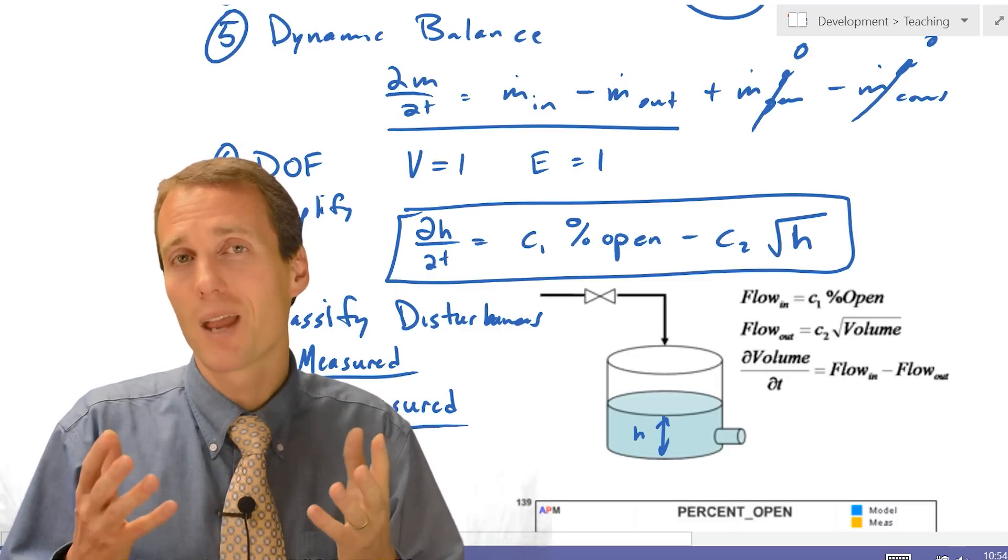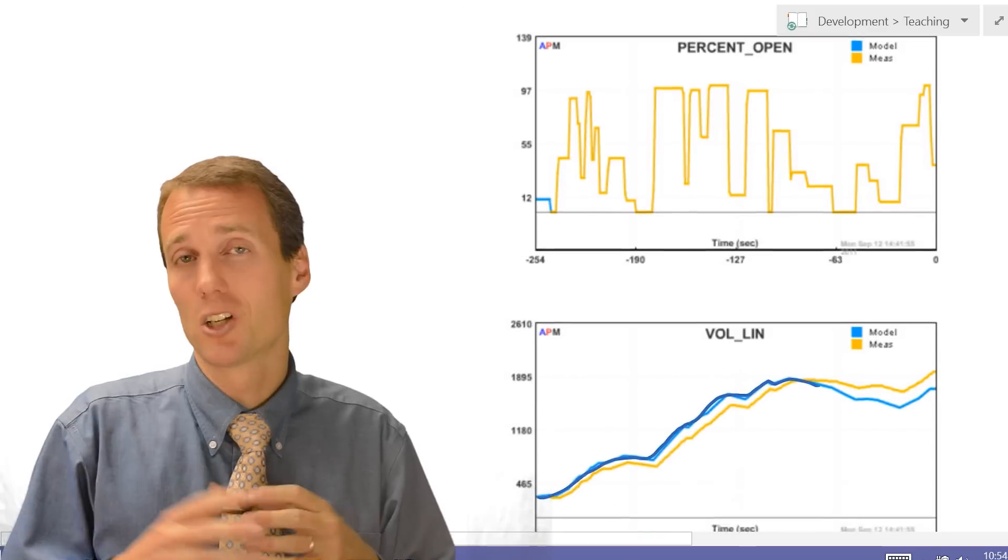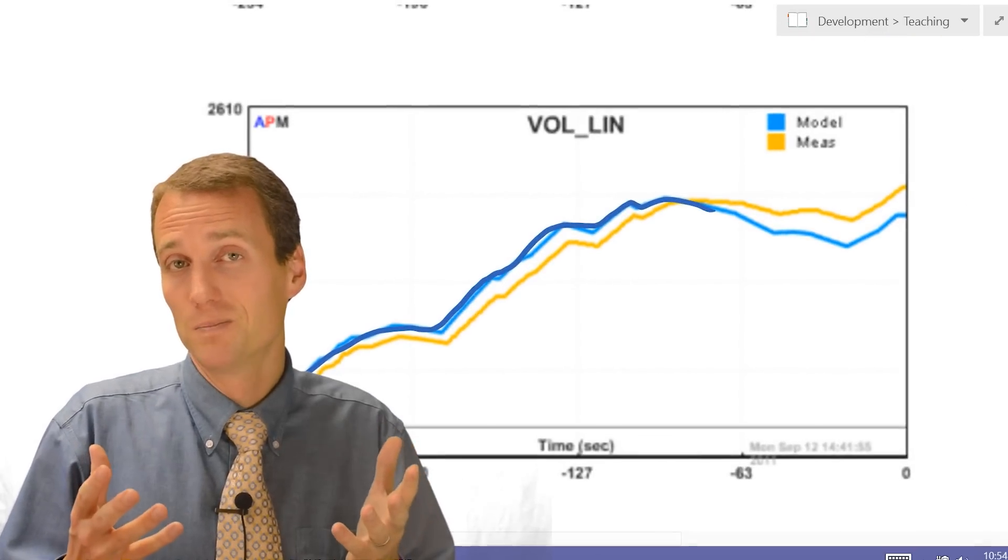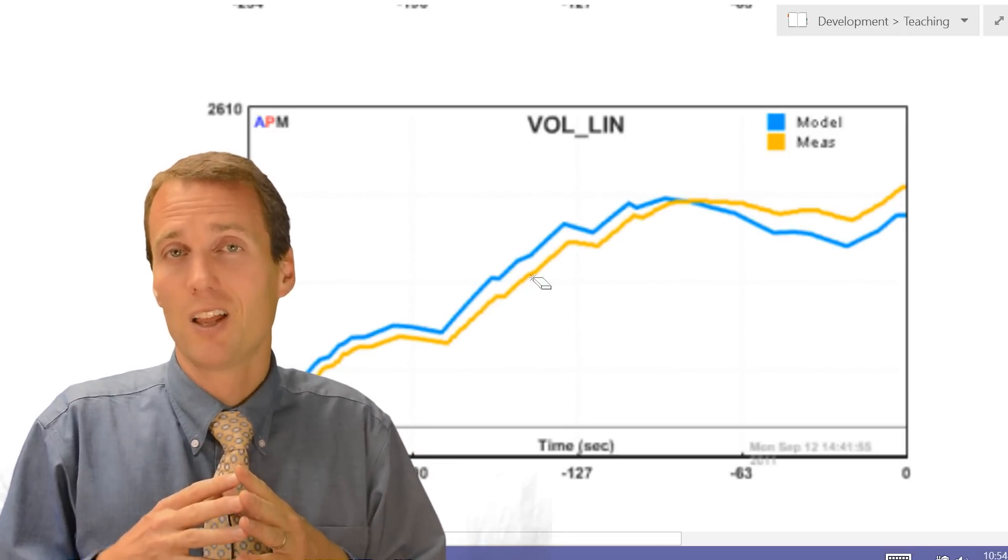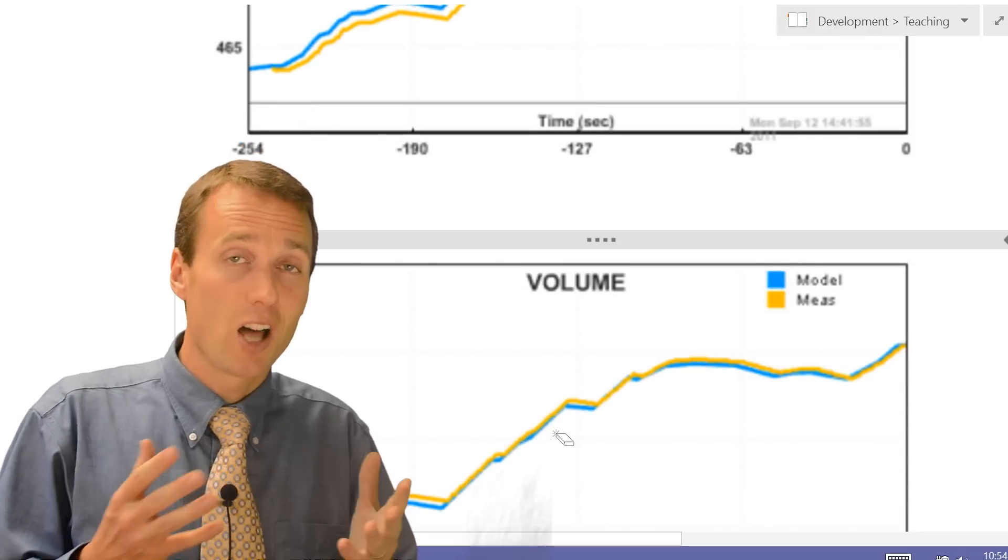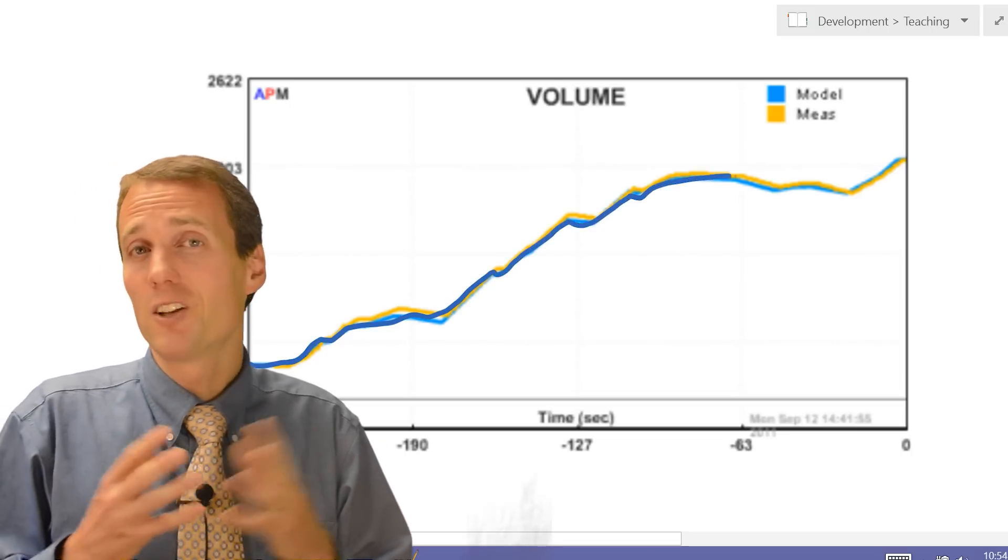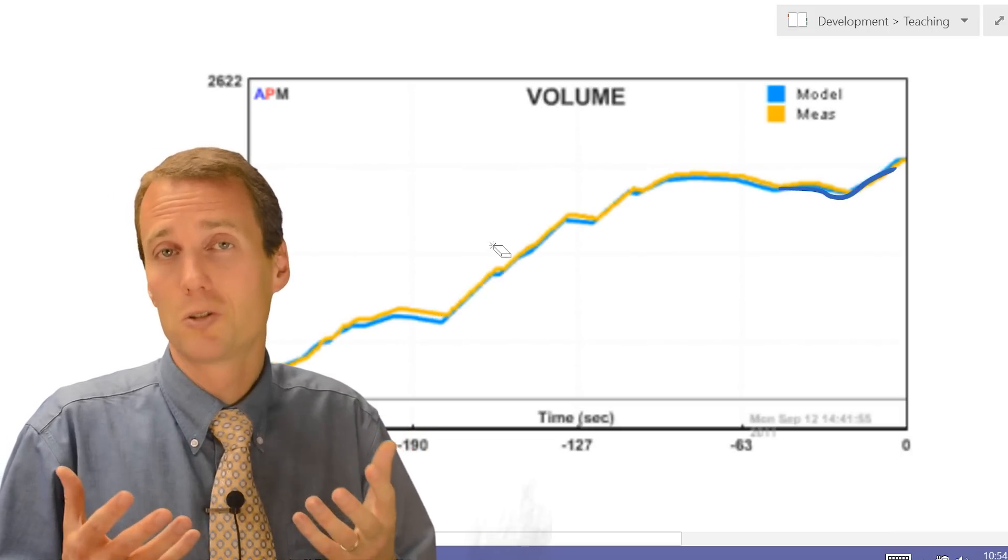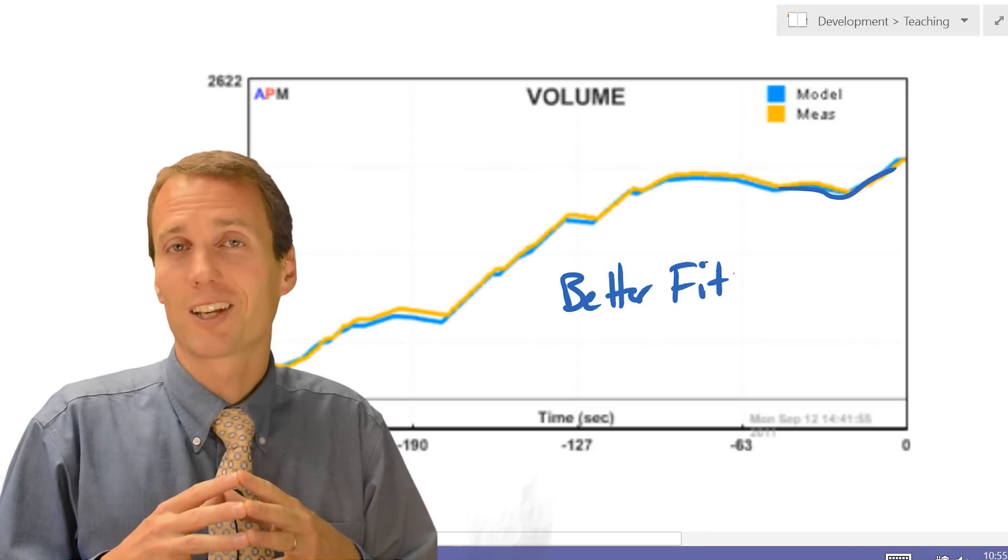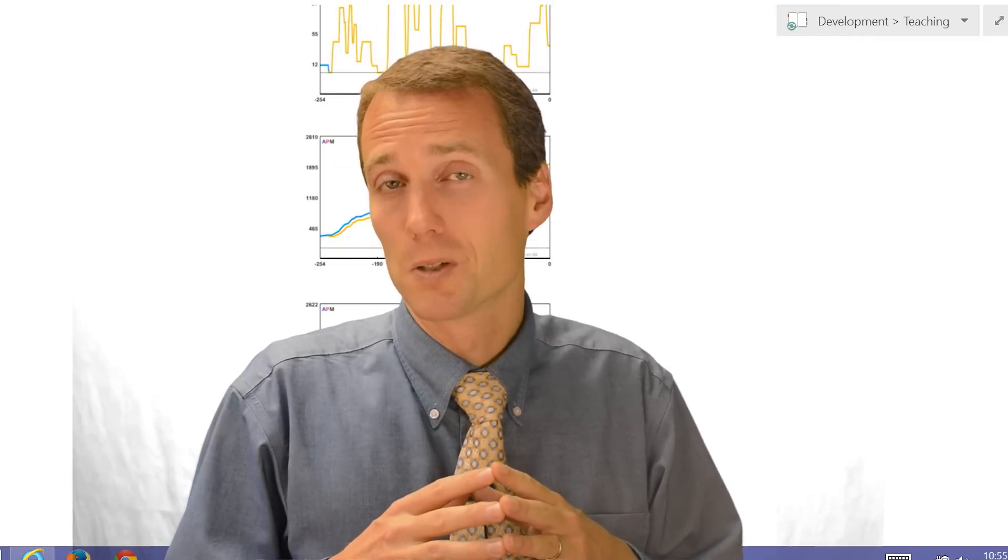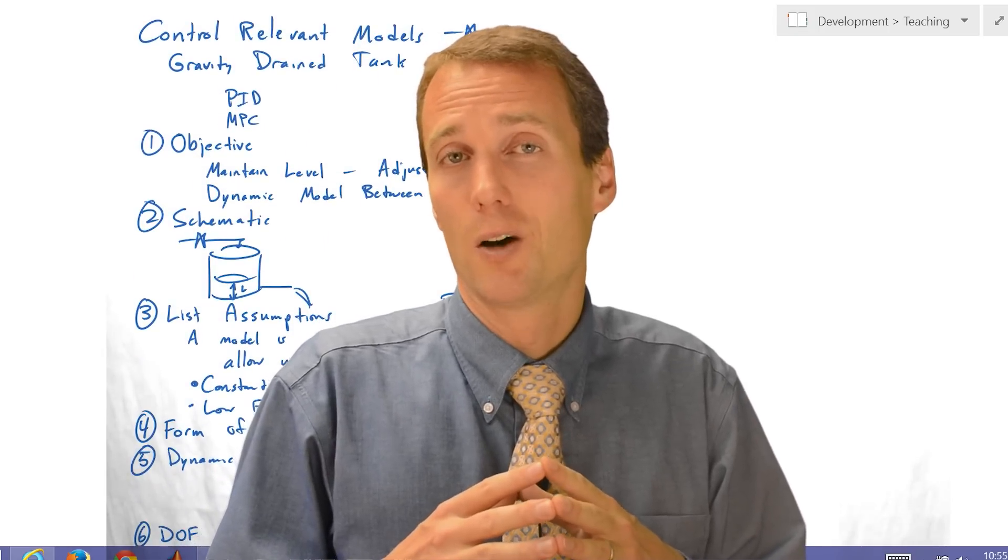So now that we have our model, we're going to go ahead and fit it to the data. Now this first plot shows the fit with a linear model. So we've linearized the model and then fit it to the data. This might be like a first order plus dead time model. The second one that I have is going to be a nonlinear model. So the form that we developed with the square root of the height, that makes it a nonlinear model. And it fits much better. So you can see that the nonlinear model, if the system is truly nonlinear, nonlinear model might fit better to the system. So that concludes this demonstration on how to develop a first principles model, or really a hybrid model with unknown parameters, and how to fit coefficients within that model.